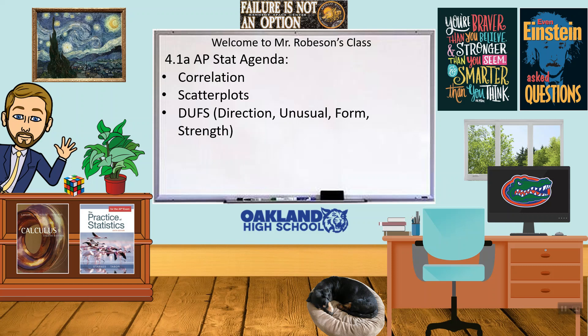Hi folks, welcome back to AP Statistics with Mr. Robeson. We are starting Unit 4 today, and Unit 4 is on something a little different — it's called Linear Regression. So we're looking at lines, like stuff from Algebra 1 and Algebra 2. The first thing we're going to look at is Correlation, then Scatter Plots, and how to describe Scatter Plots. For scatter plots, we have DUFFs — like the beer in the Simpsons, except spelled differently.